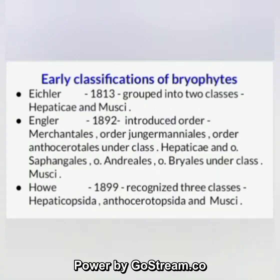Classification of bryophytes: early classifications. In 1813, bryophytes were grouped into two classes — Hepaticae and Musci. Under class Hepaticae: orders Marchantiales and Jungermaniales; under class Musci: orders Sphagnales, Andreales, and Bryales. In 1892, a new order was introduced.